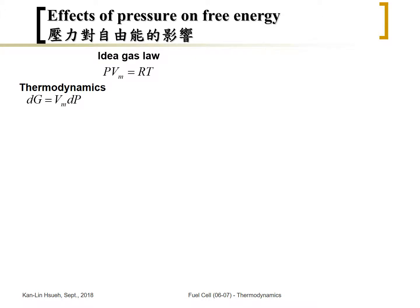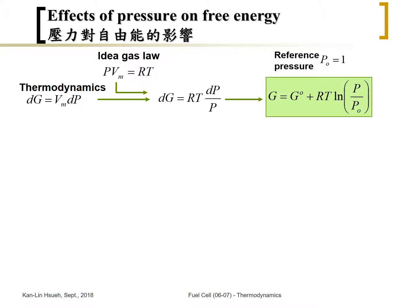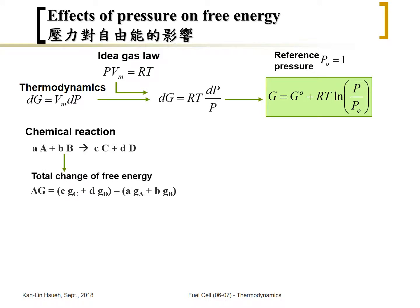From these two equations we can calculate, for a given species, the free energy change at a different pressure. If we integrate, the free energy change at another pressure can be written in this formula, where P₀ is a reference pressure assumed to be one, so we can usually omit it. For an electrochemical or fuel cell reaction written as aA + bB → cC + dD, the total free energy change can be written by substituting the individual free energy for each species.